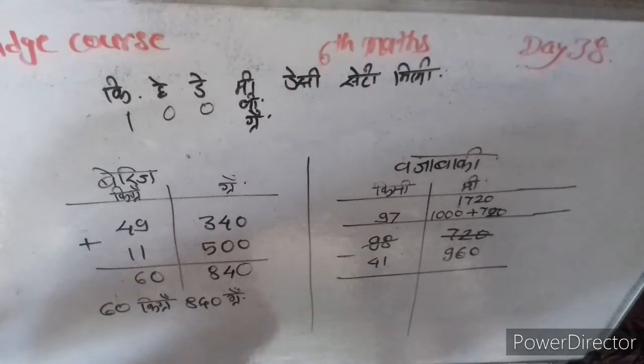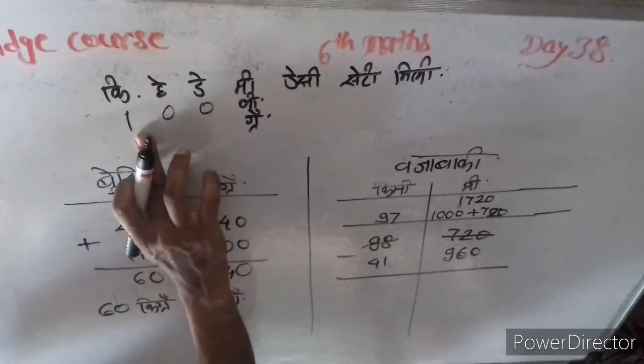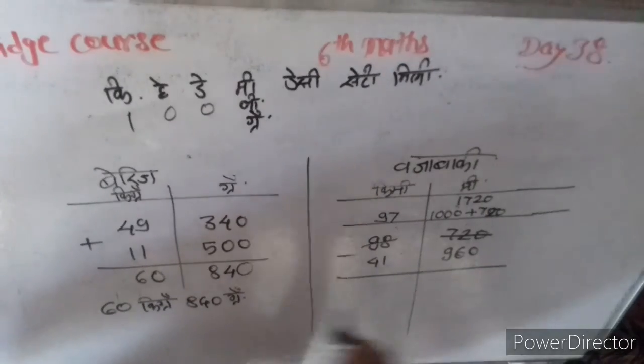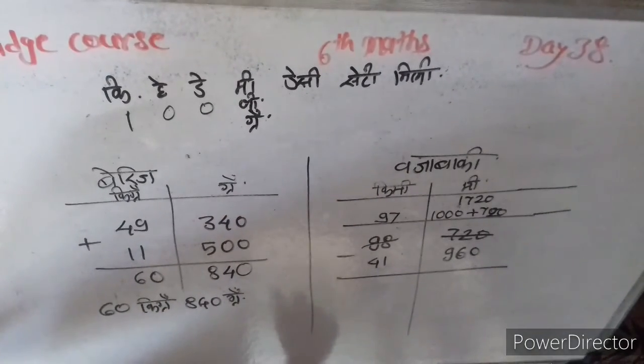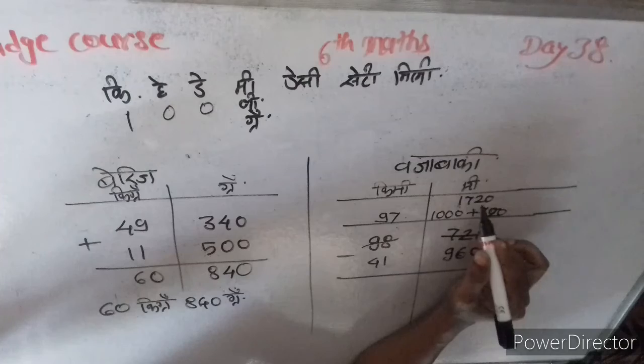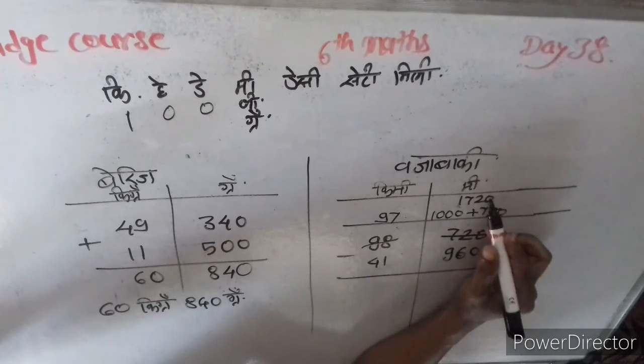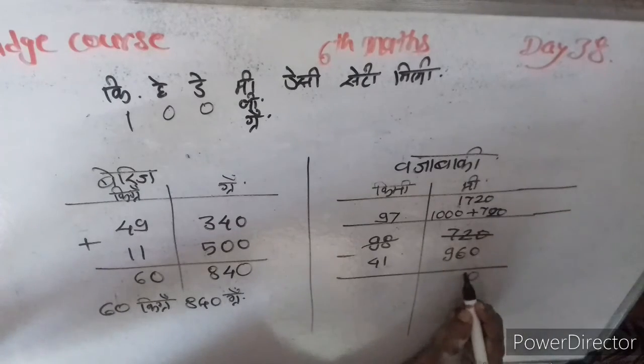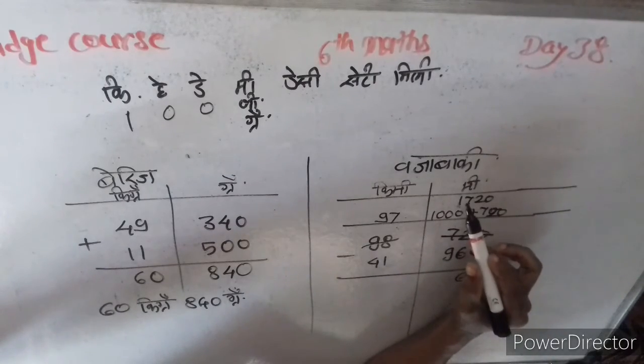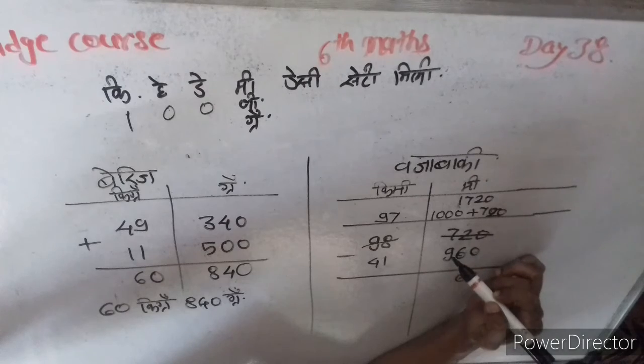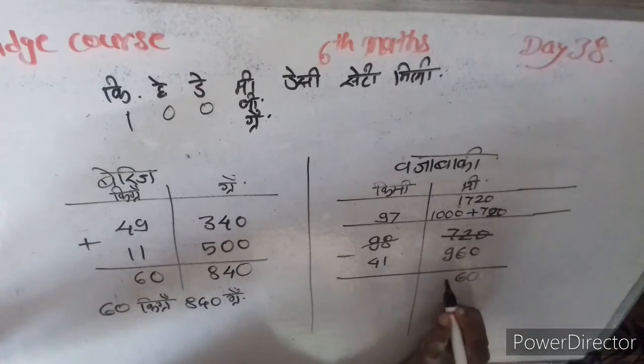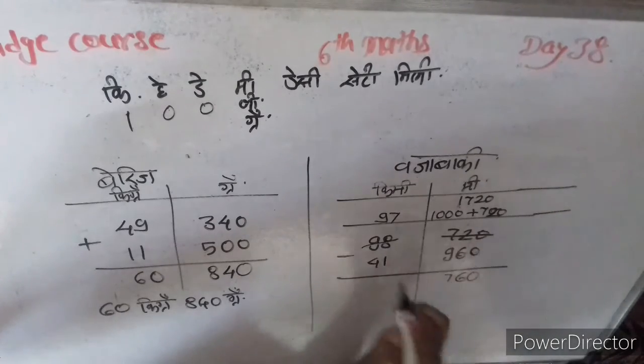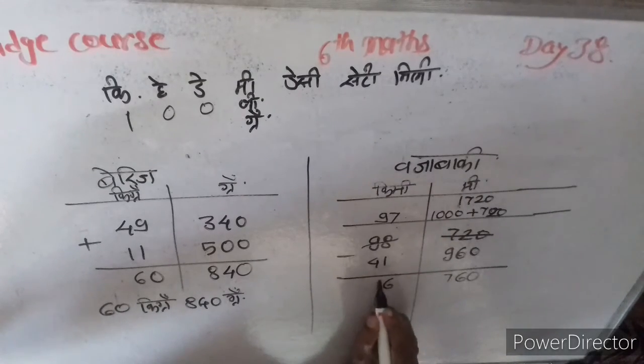Now 1720 and 960. 0, 0, 0. 12 minus 6, 6. 7 minus 9. 9 minus 4, 5. 56 kilometers.